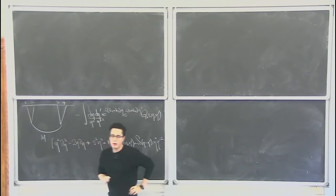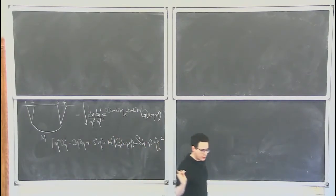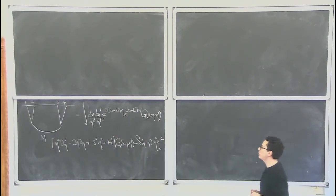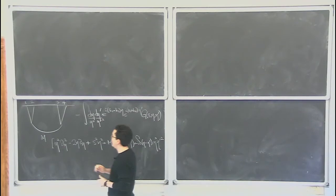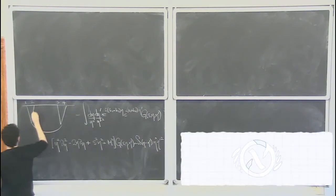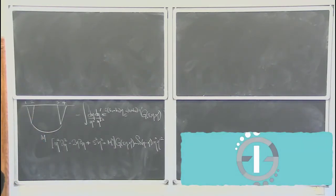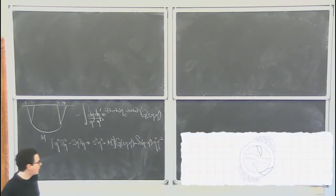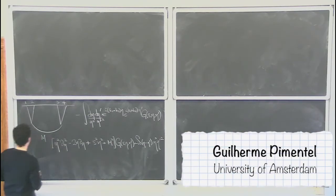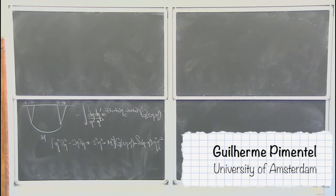We are in the middle of a battle to conquer this diagram, to understand the diagram where we have conformally coupled scalars exchanging a massive particle. For now, the massive particle doesn't have spin.